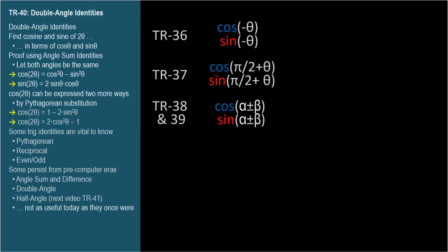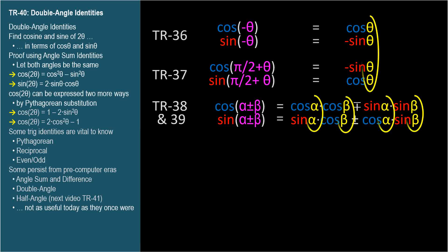We're continuing the theme of recent videos where we have trig functions but the argument isn't a simple angle. We want to express the cosine and sine of a compound angle expression in terms of sine and cosine of the constituent angles.